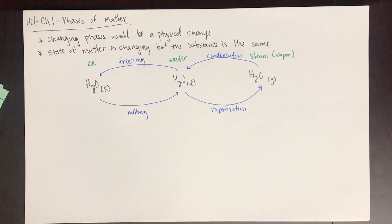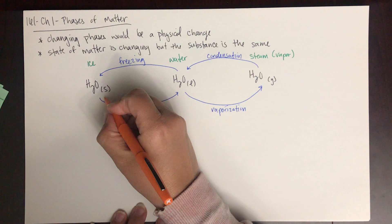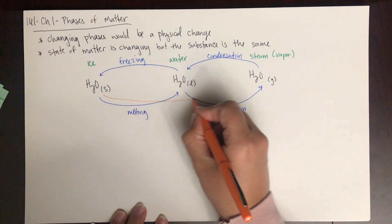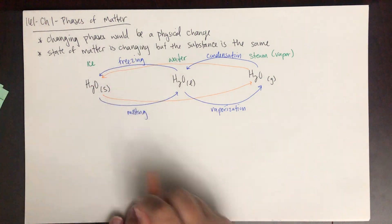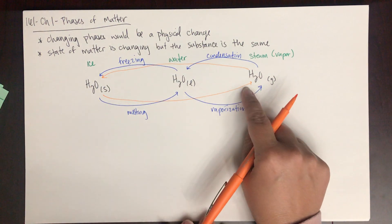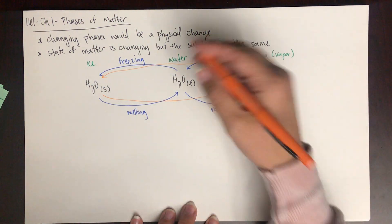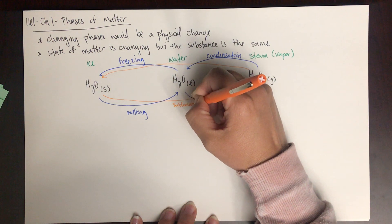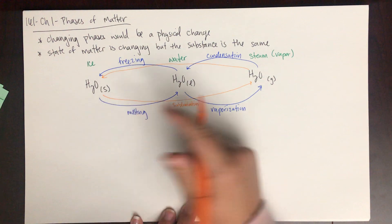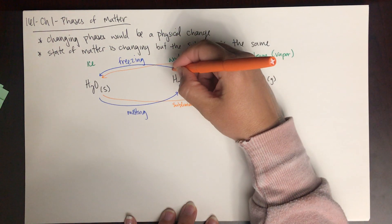There are phase changes that can skip this middle phase altogether. You can go from a solid to a gas, which is called sublimation, or from a gas to a solid, which is called deposition.